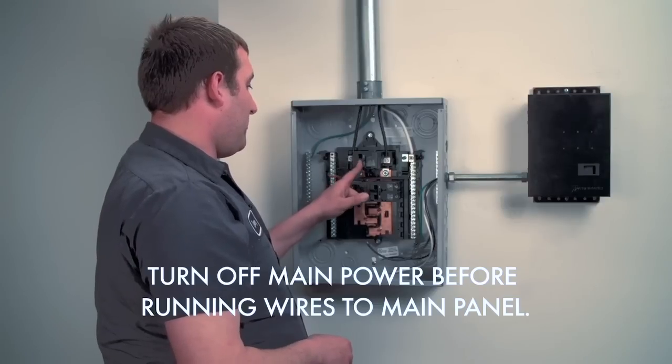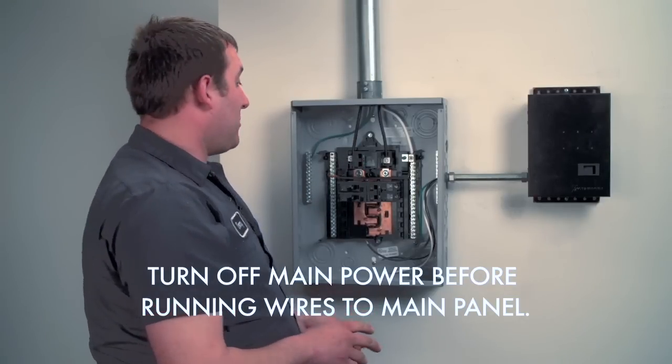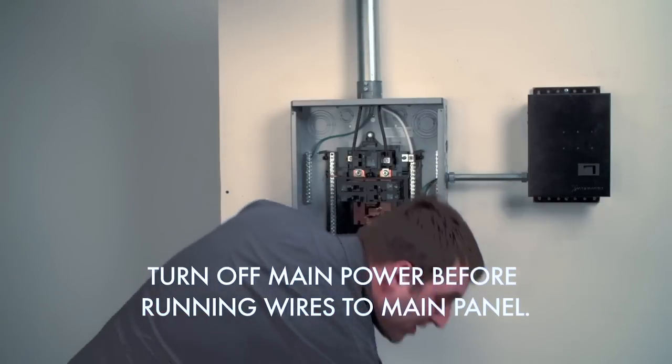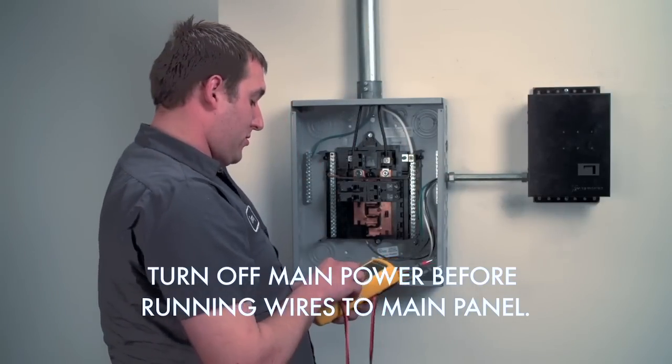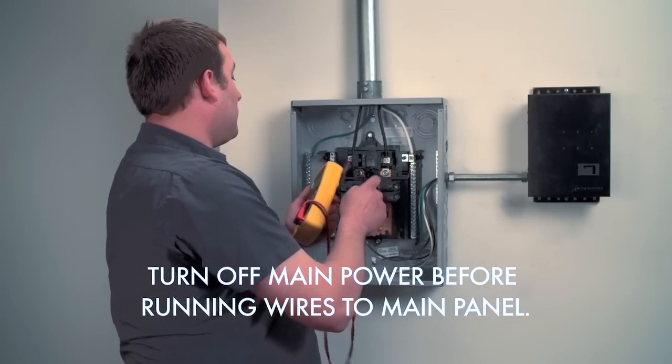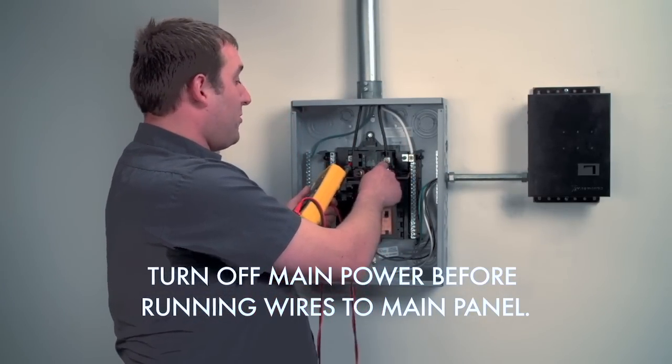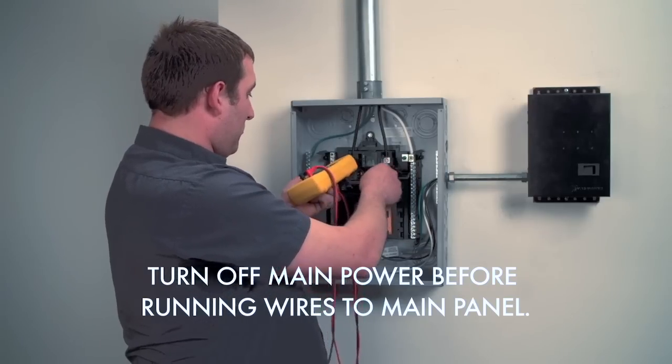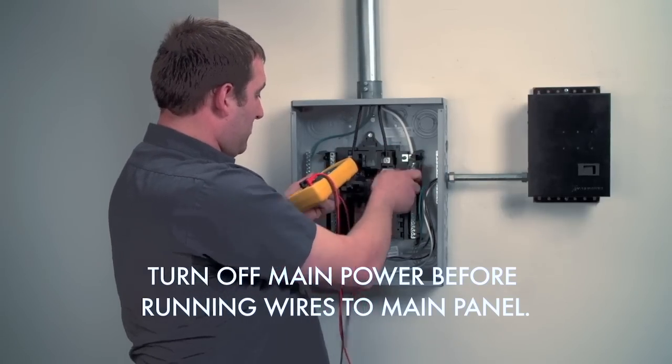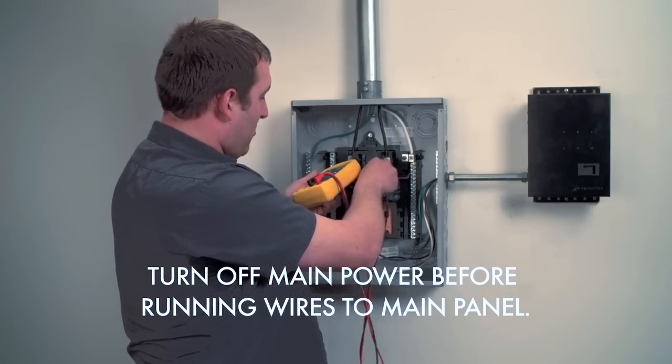The second thing you want to do after everything is already attached is you want to check for power to make sure that everything is turned off. With the main breaker off as it is, you should have no power at the source.